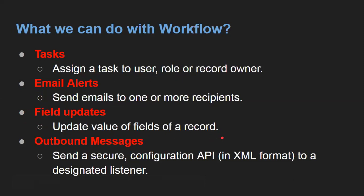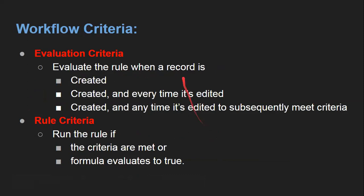Now, to do these things, we need to implement two criteria. One is evaluation criteria and the second one is rule criteria. Evaluation criteria works when your record is created or edited. It focuses on two parts: either your record is created, or it is edited, or both.